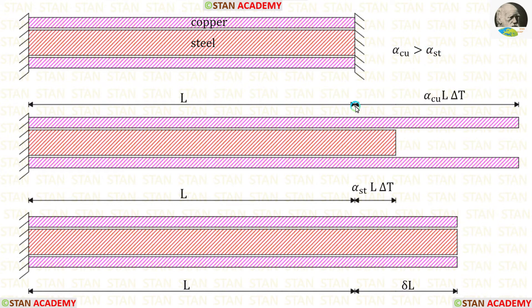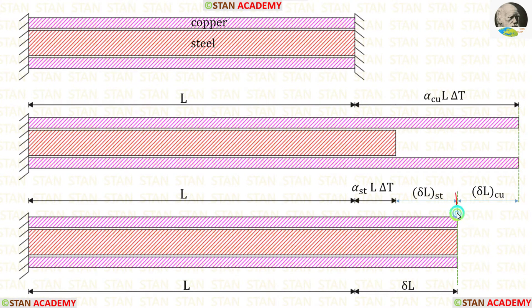The change in length in copper is alpha Cu L delta T, and the change in length in steel is alpha ST L delta T. In reality, it won't happen like this. Both of the materials will take an intermediate position.